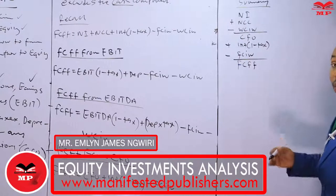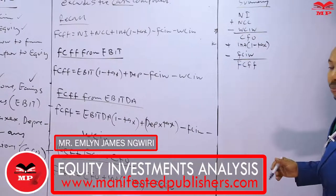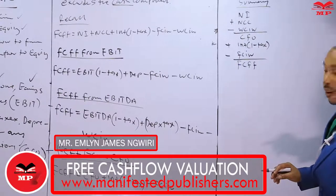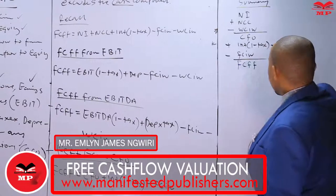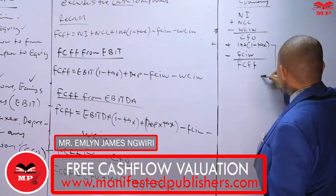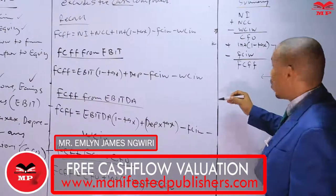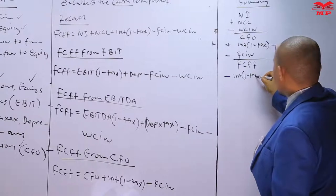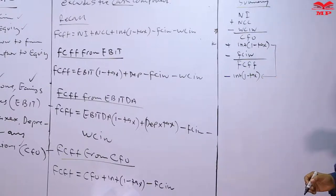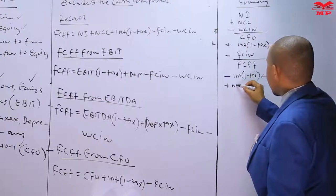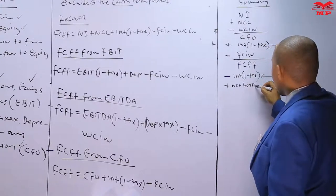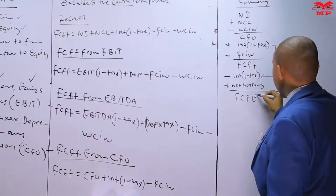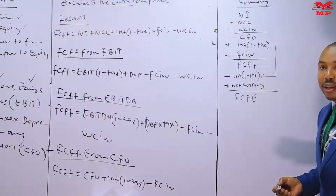Moving on, we'll explain free cash flow to equity — FCFE — in lesson two. From FCFF, this component needs to be netted off since it does not represent an interest outflow, so we subtract interest times (1 minus tax), then we add net borrowing, and what we get is FCFE. This will be the key highlight in lesson two.